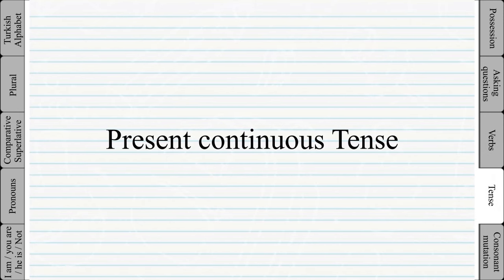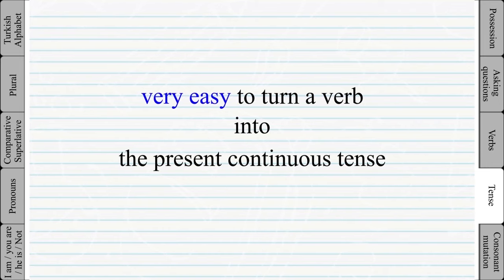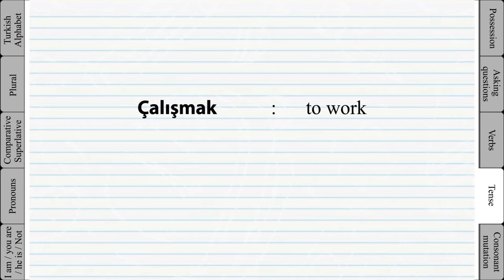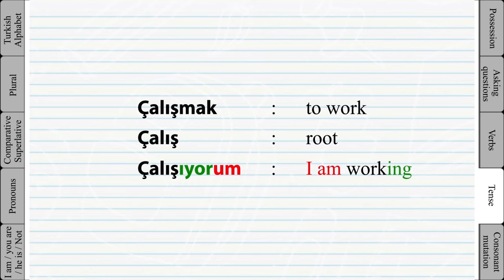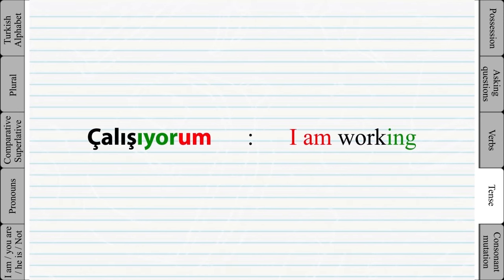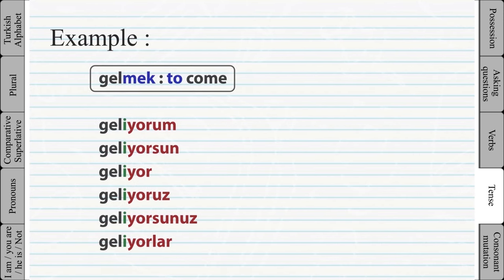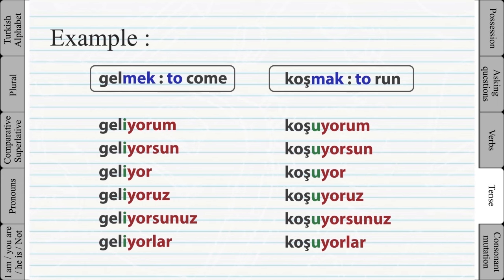Present continuous tense. It is very easy to turn a verb into the present continuous form. The 'yor' is like the '-ing' in English — simply add 'yor' after the verb root and then add the personal ending. The only thing that changes is the vowel in front of 'yor'; the 'yor' itself is not affected by the vowel harmony rules. You will notice that the only thing changing is the first vowel of the tense suffix.